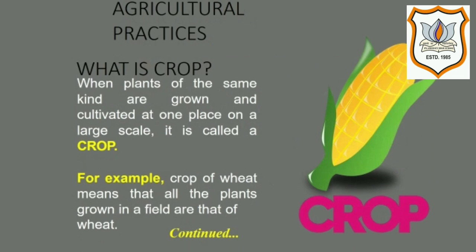Another question which comes to our mind is: what is a crop? When the same kind of plants are grown in a field on a large scale to obtain food — like cereals, which include wheat, rice, maize, etc. — as well as pulses, garlic, vegetables, and fruits, it is called a crop.